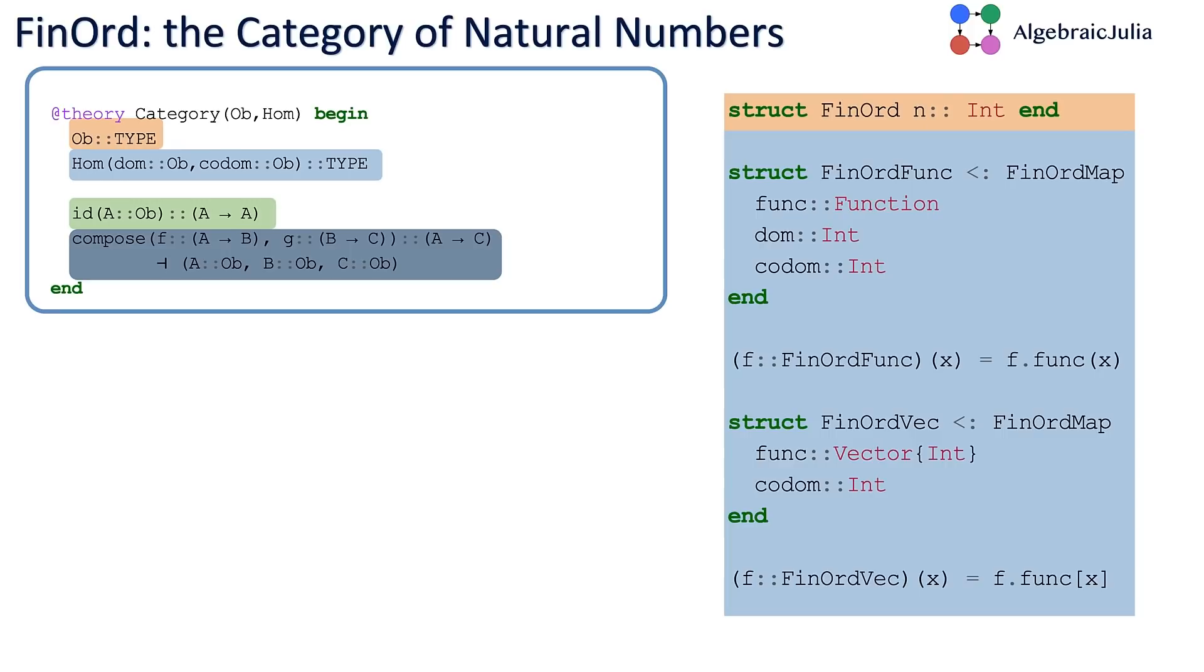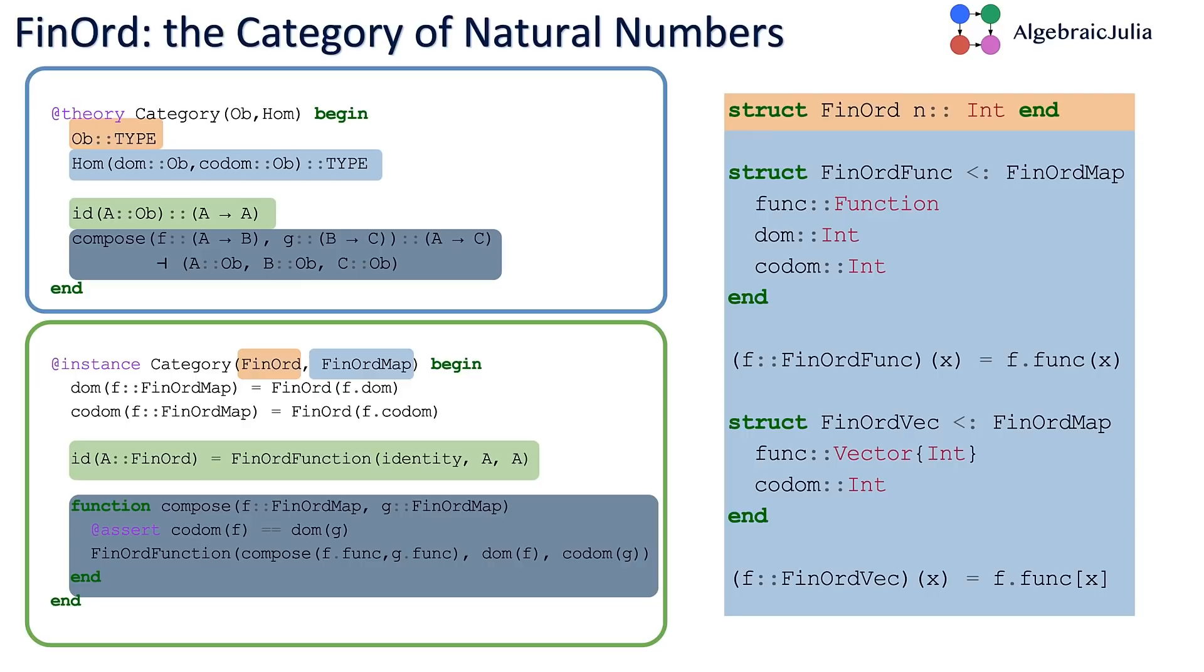FinOrd is just a number n wrapped in a struct so we can use dispatch, and then we introduce structs for storing the morphisms. FinOrdFuncs are lazy—they store the function as a function object, and you call that function to apply the map. FinOrdVecs are eager—you store the function as a vector from the indices into some codomain. Because Julia functions are not typed by their domains and codomains like they would be in a statically typed language like Haskell, we need to store the domains and codomains explicitly in these structures.